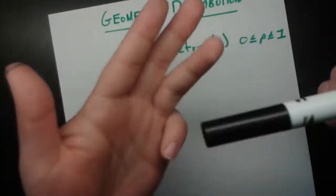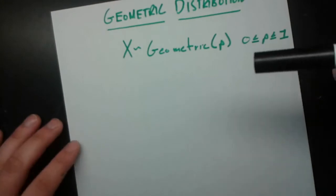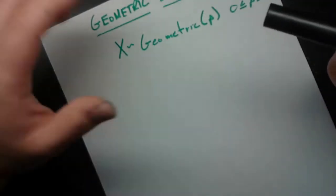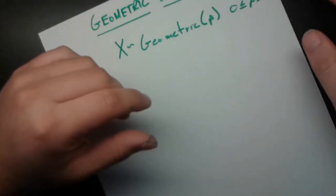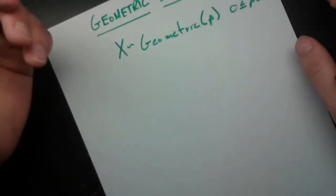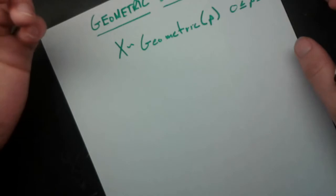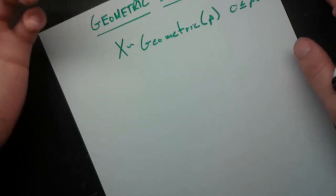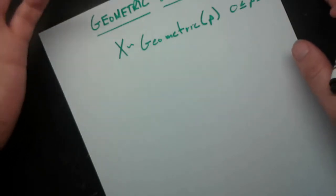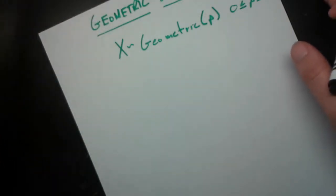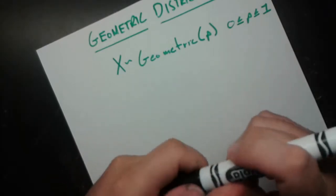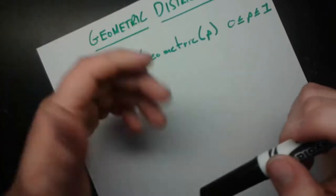You can apply this to other scenarios too, such as coin flips — maybe the time until you get a heads, or tails if you're taking tails as success. That's the basic description of how we generate this random variable.